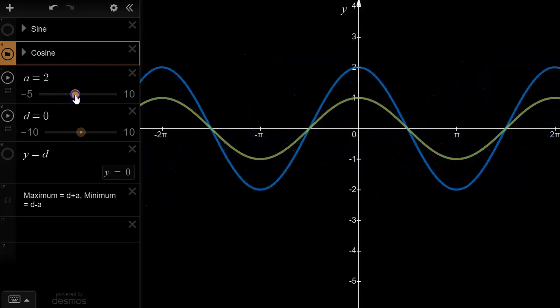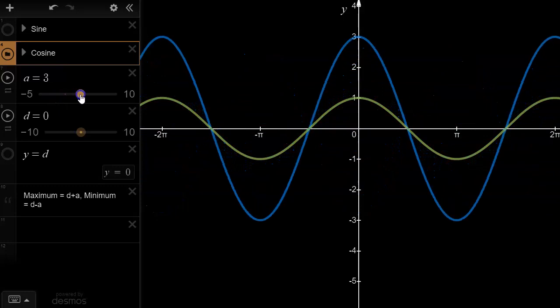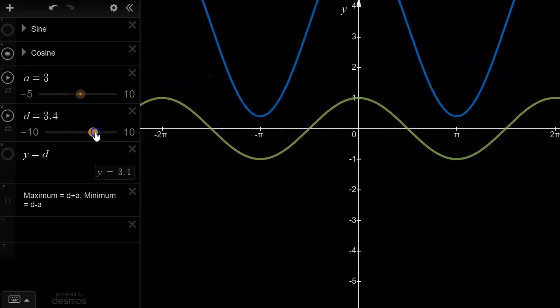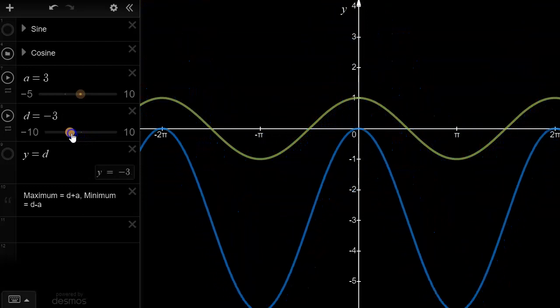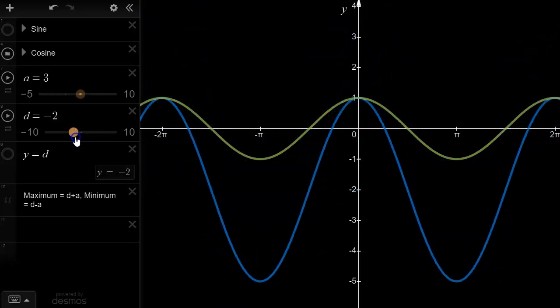When we talk about d, again, d represents the vertical translation, or as we call it here, the vertical displacement of the graph.